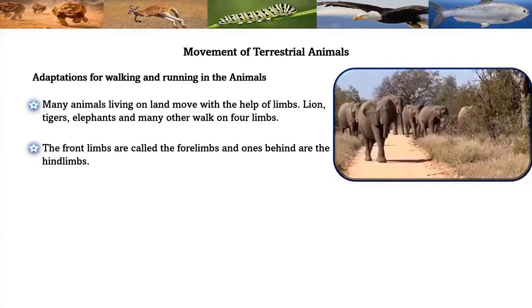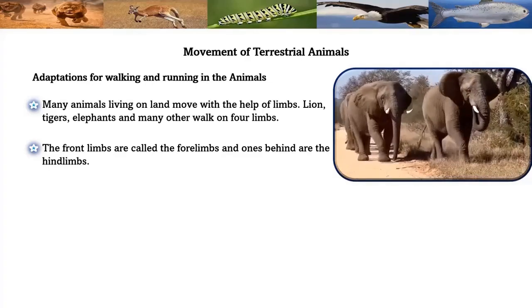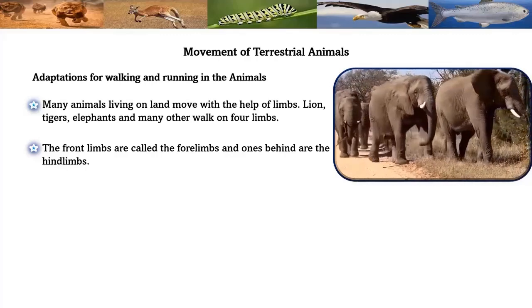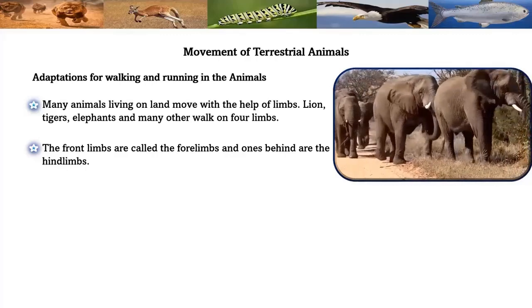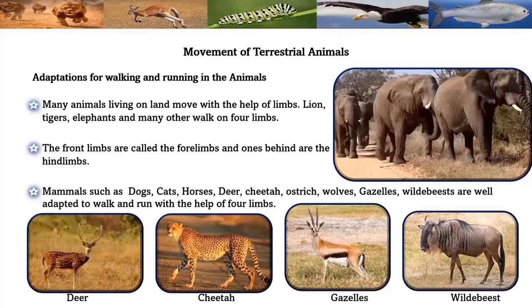Movement of terrestrial animals — adaptation for walking and running. Many animals living on land move with the help of limbs. Lions, tigers, elephants, and many others walk on four limbs. The front limbs are called forelimbs and the ones behind are called hind limbs. Mammals such as dogs, cats, horses, deer, cheetahs, ostriches, wolves, gazelles, and wildebeest are well adapted to walk and run with the help of four limbs.